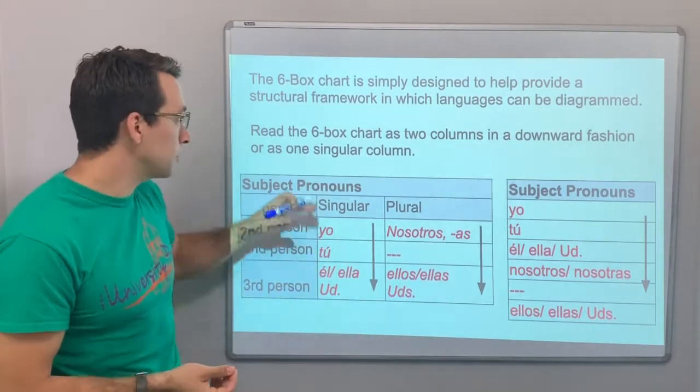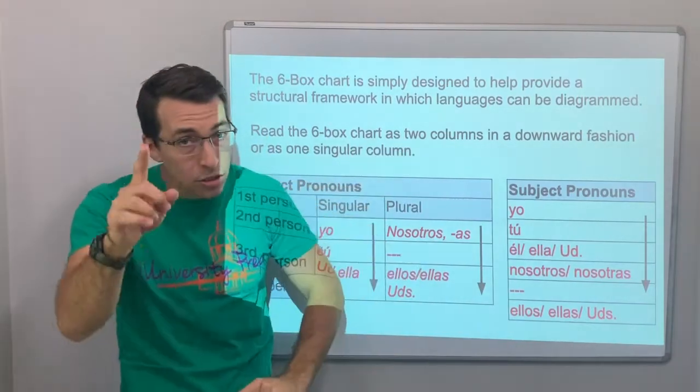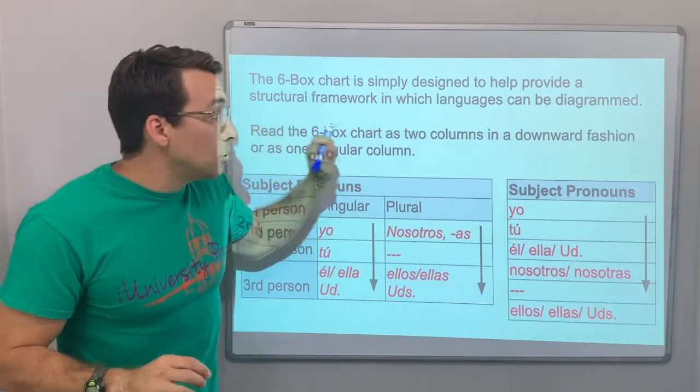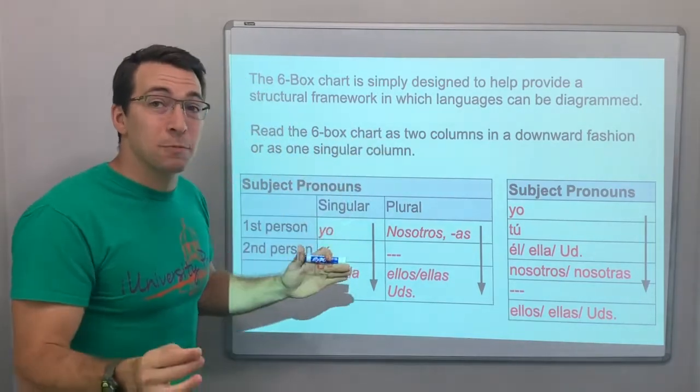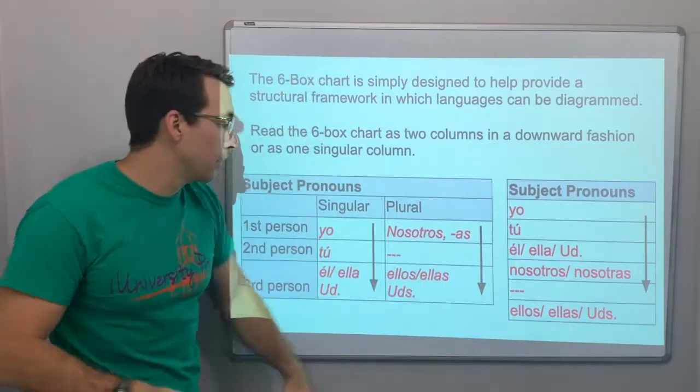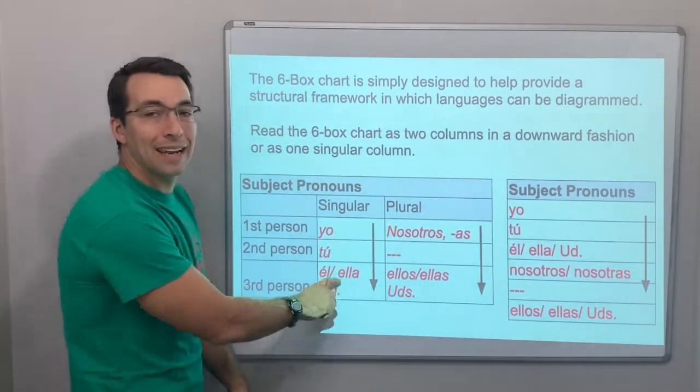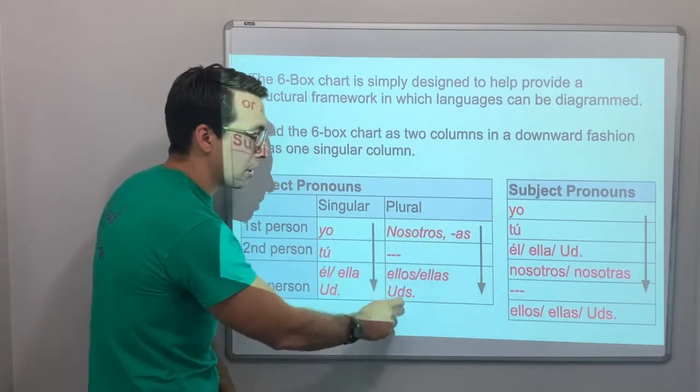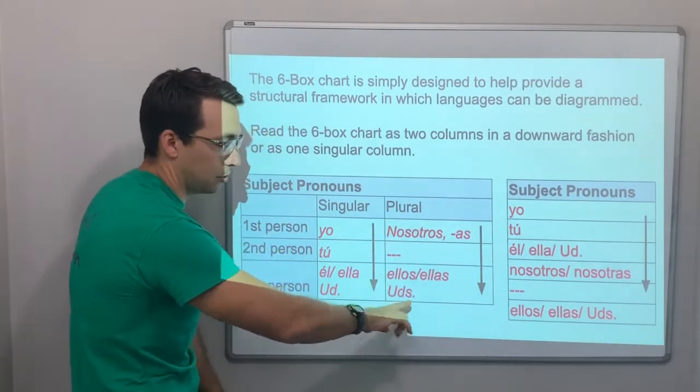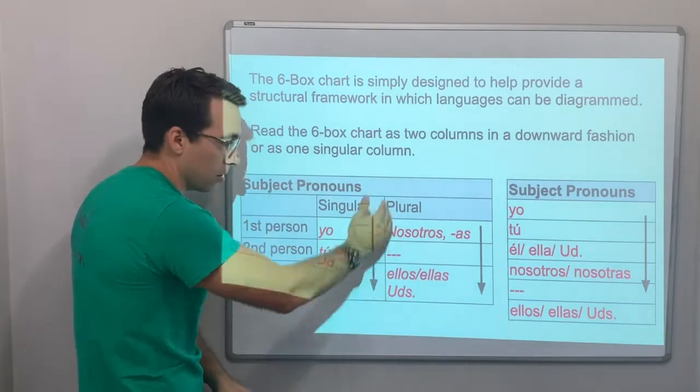Okay? So, read the six-box chart. This is crucial. Read the six-box chart as two columns in a downward fashion or as one singular column. Yo, tú, él, ella, usted, nosotros, nosotras, ellos, ellas, ustedes. Do not read across. Don't do that. Read down.